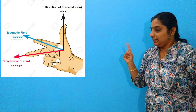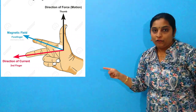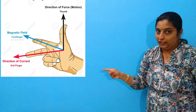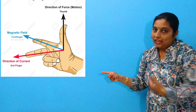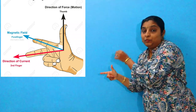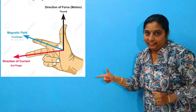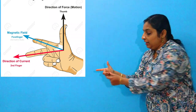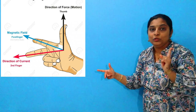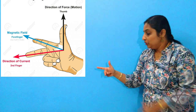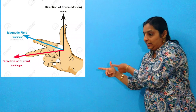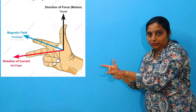The forefinger represents the direction of the magnetic field — same as before, forefinger represents magnetic field. The thumb represents the motion of the conductor. And then our middle finger represents the direction of the induced current.